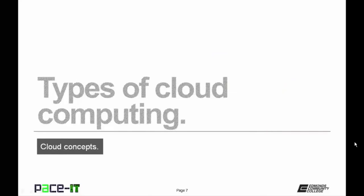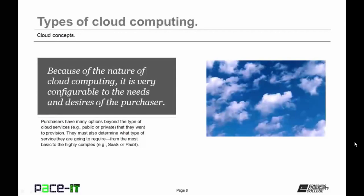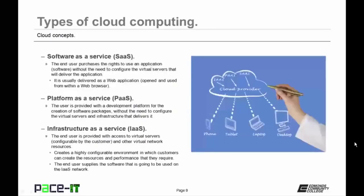Now let's discuss types of cloud computing. Because of the nature of cloud computing, it is very configurable to the needs and desires of the purchasers, who have many options beyond just the type of cloud service. There's Software as a Service, or SaaS: the end user purchases the rights to use an application without the need to configure the virtual servers that will deliver it. SaaS is usually delivered as a web application, opened and used from within a web browser.